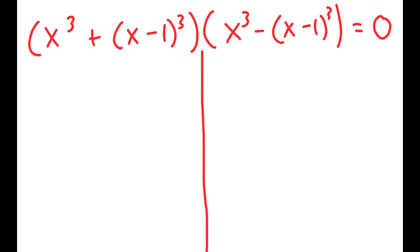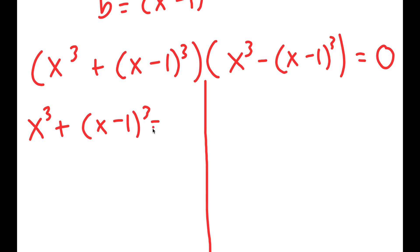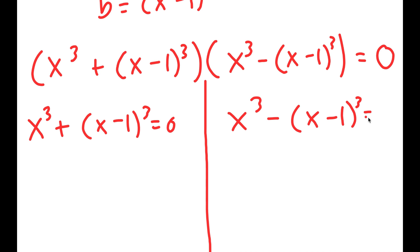Now from here, I'm going to divide this into two equations. For my left-hand side equation, I get x to the power of 3 plus x minus 1 to the power of 3 is equal to 0. And from my right-hand equation, I have x to the power of 3 minus x minus 1 to the power of 3 is equal to 0.